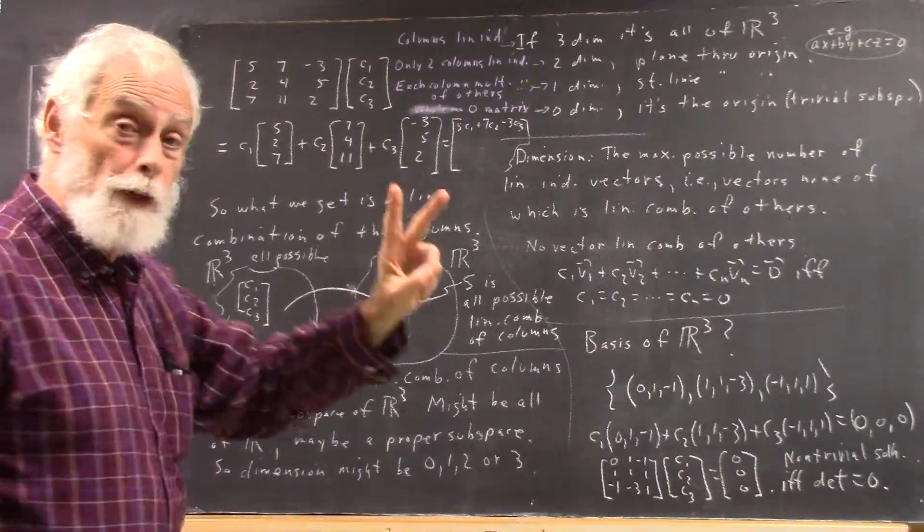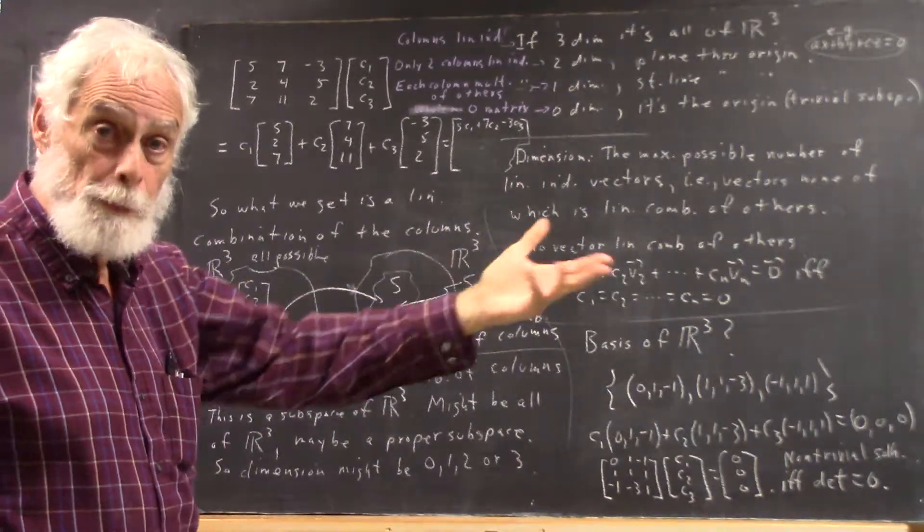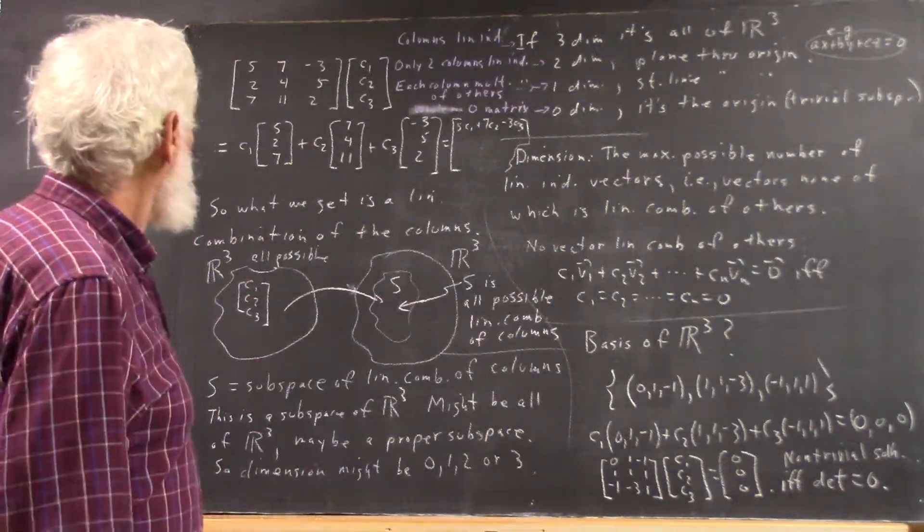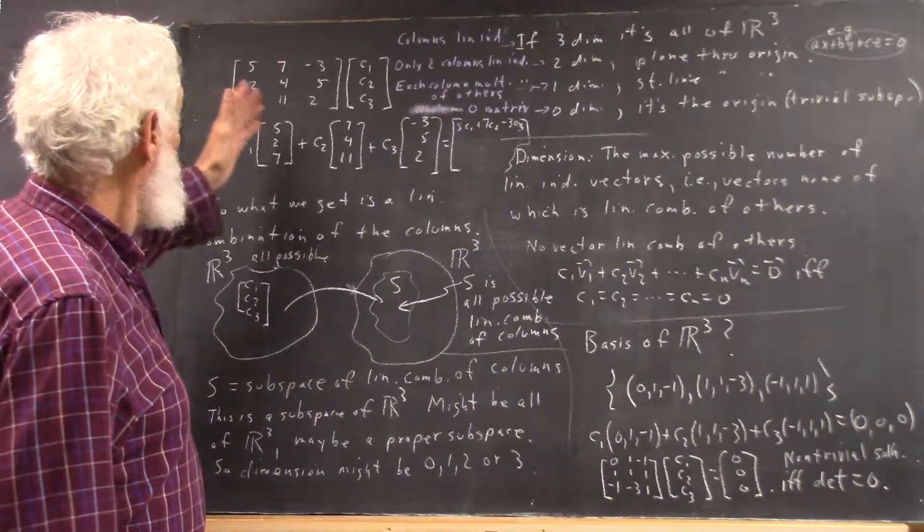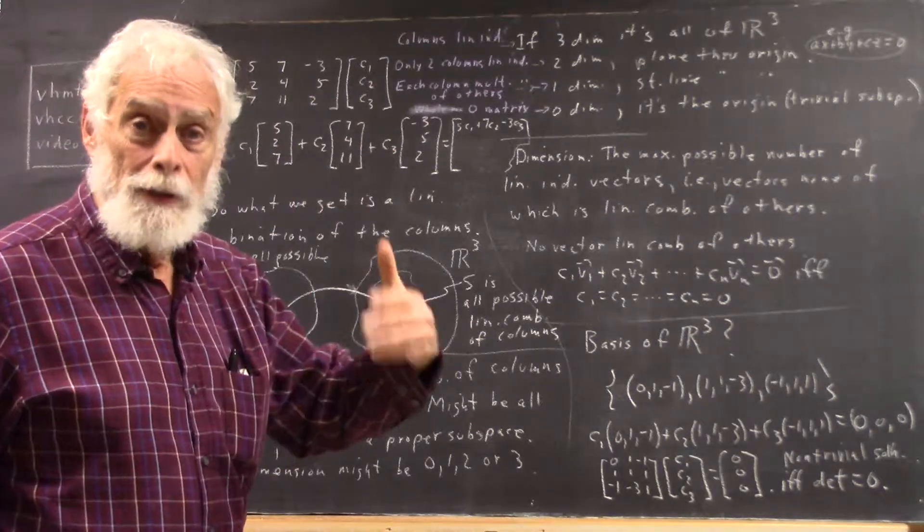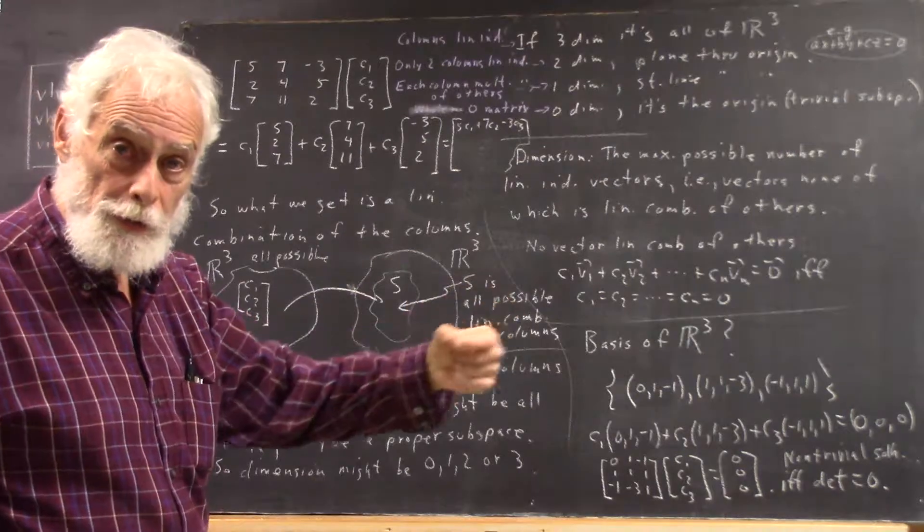or two of them could be linearly independent with the third one dependent on the other two, or they could all be multiples of each other, which means they're all linearly dependent on each other.